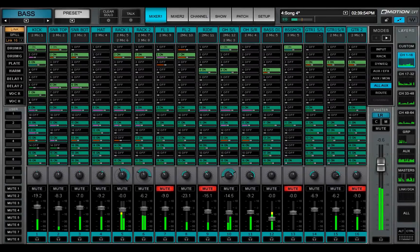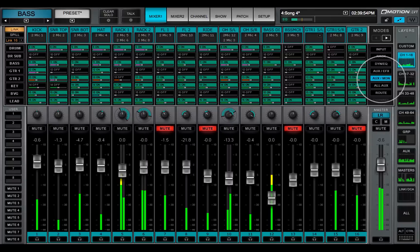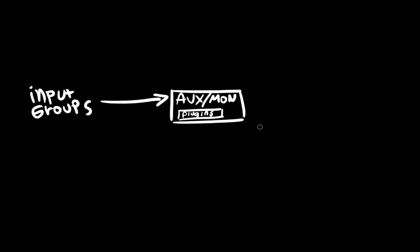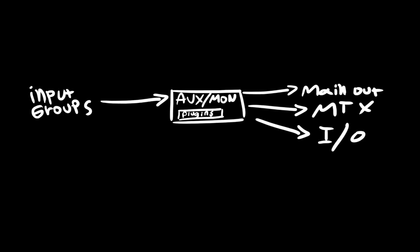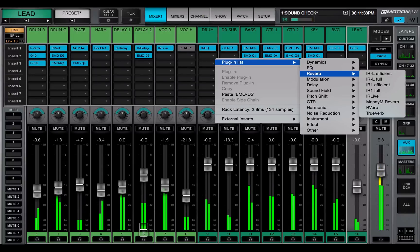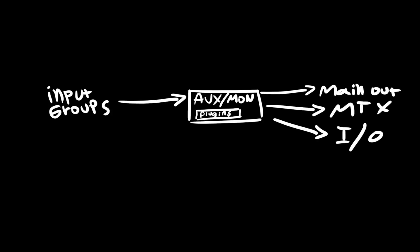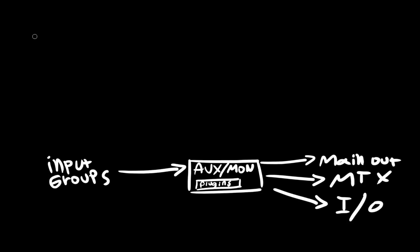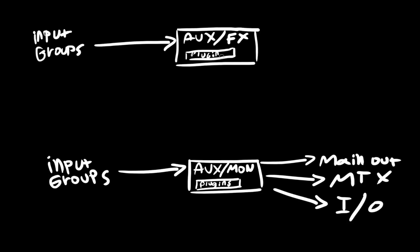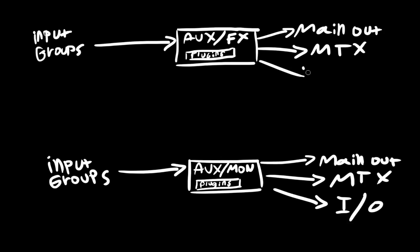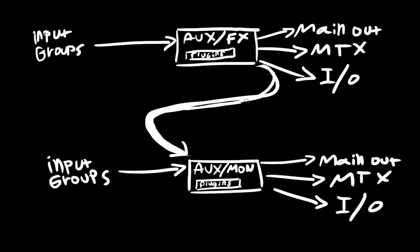Channels and groups can be sent to any of the 16 auxiliaries. The eight aux monitor buses are typically used for monitor feeds. Audio is processed on the aux bus and then routed directly to the main outs, matrix, or to I/Os. You don't need to return aux buses to a mixer input. Each aux monitor bus can have up to eight plug-ins, so effects such as reverb or delay can be added. An aux effects bus behaves in the same manner — channels and groups are sent to it, audio is processed and then routed to the main outs, matrix, or directly to I/Os.